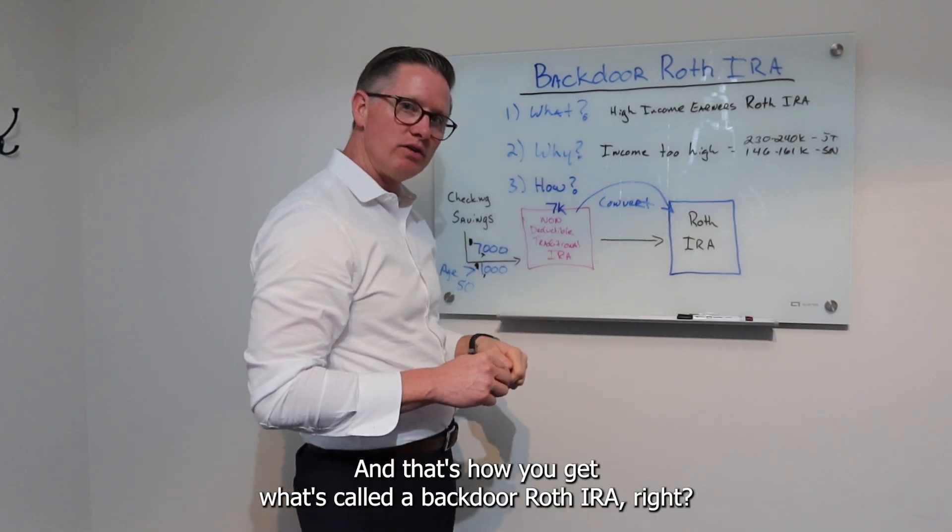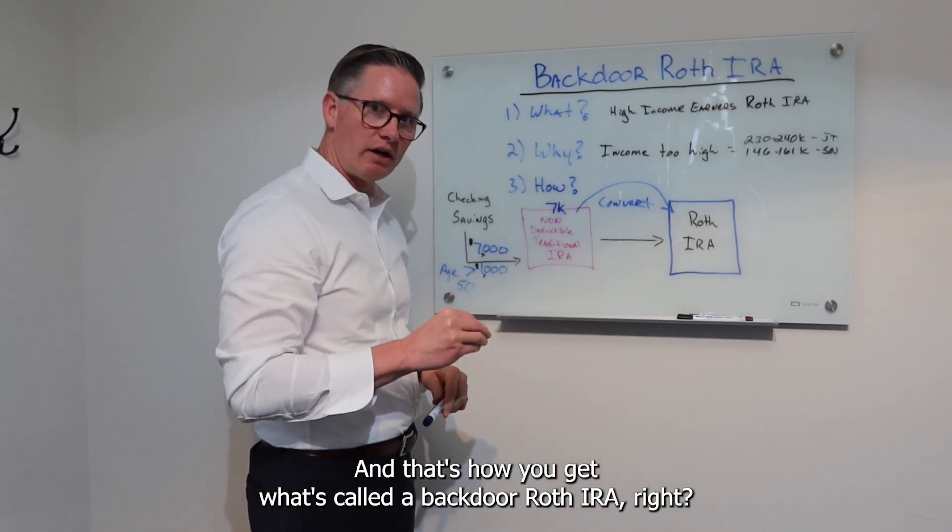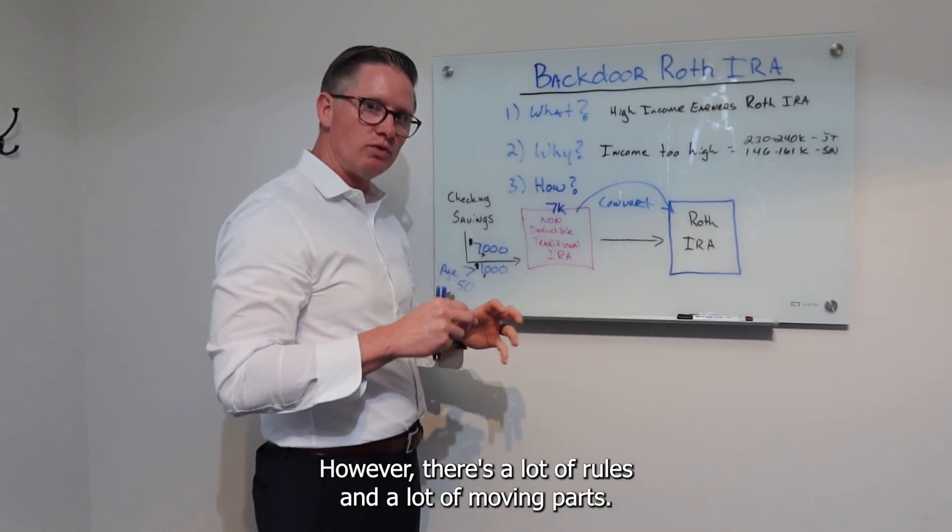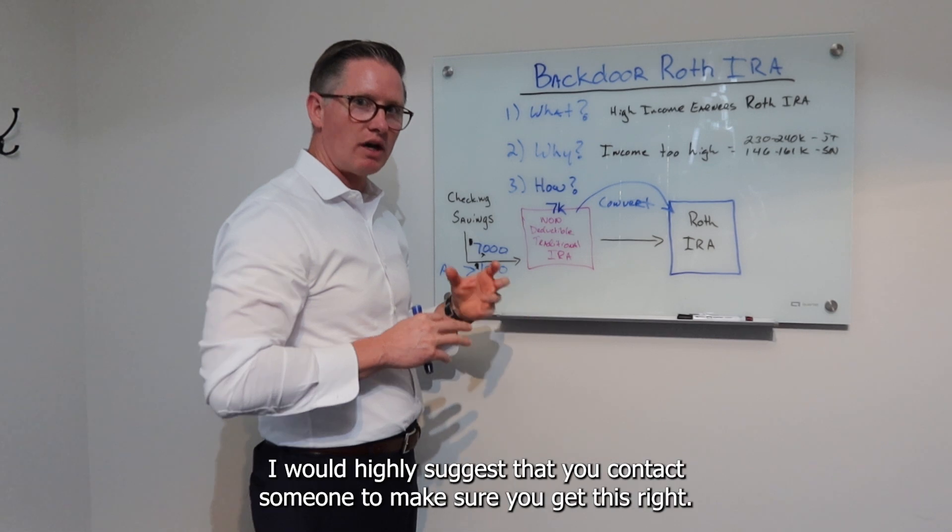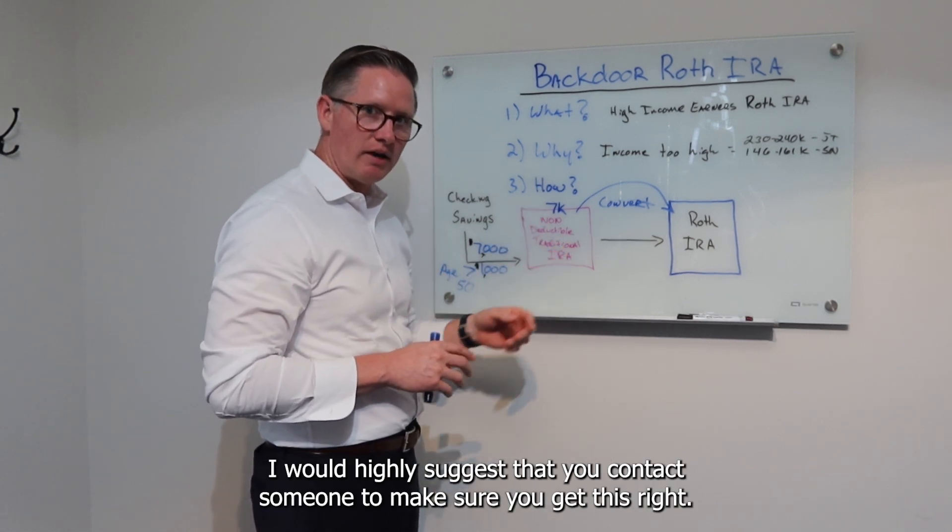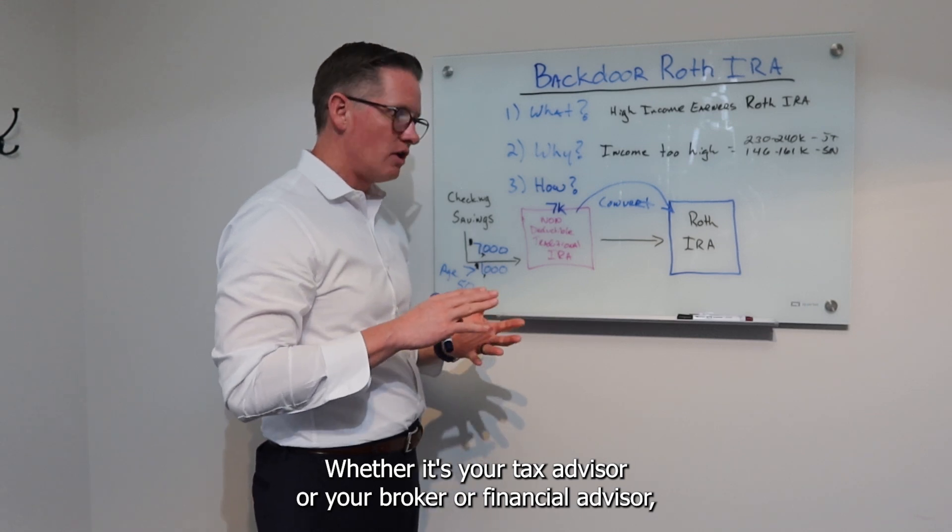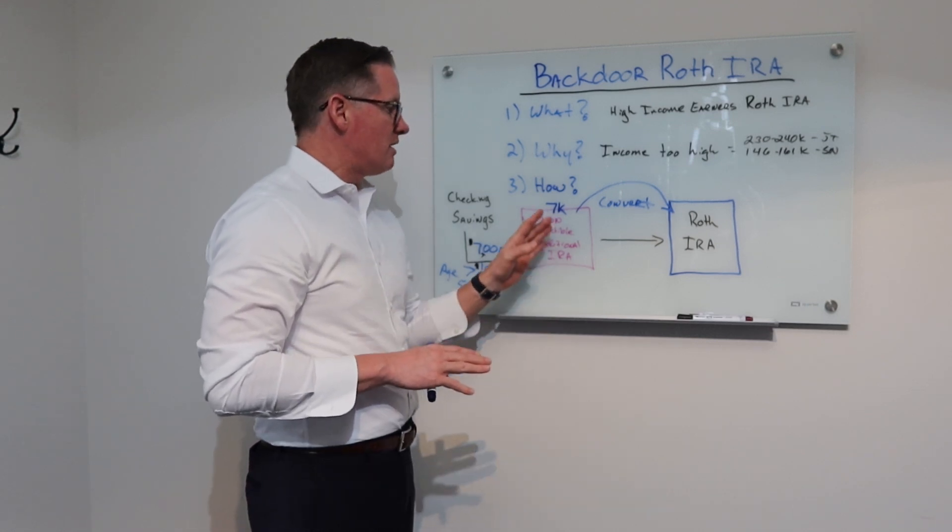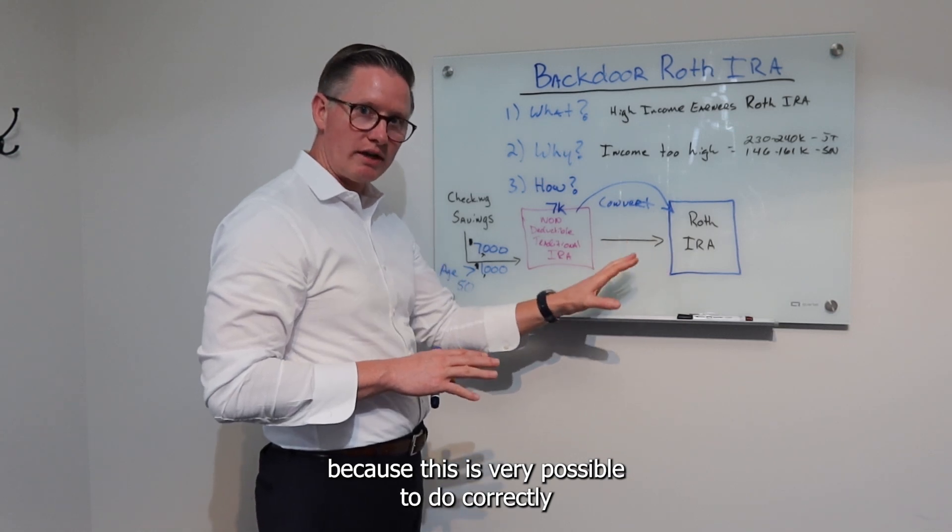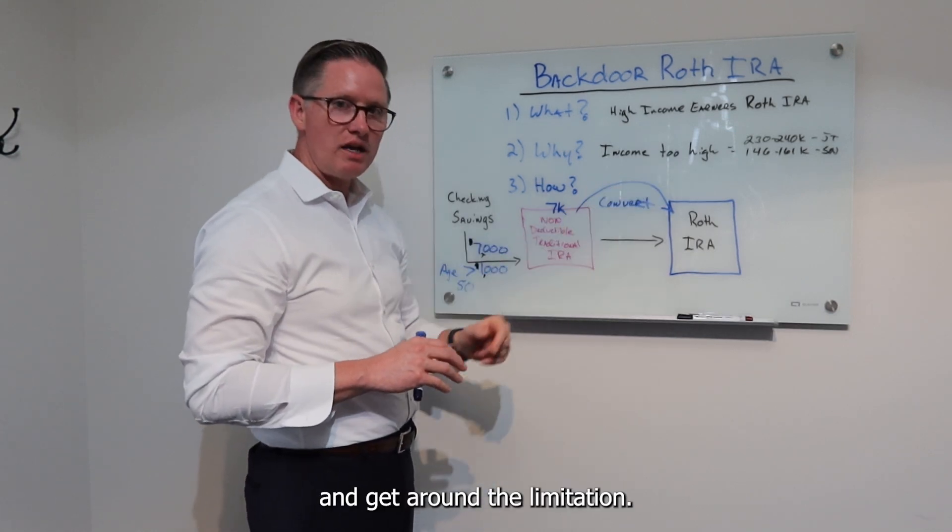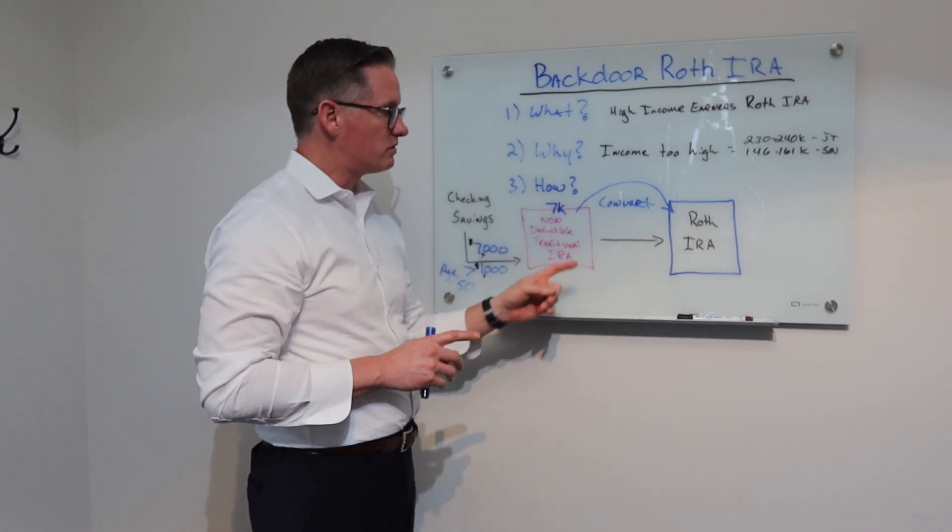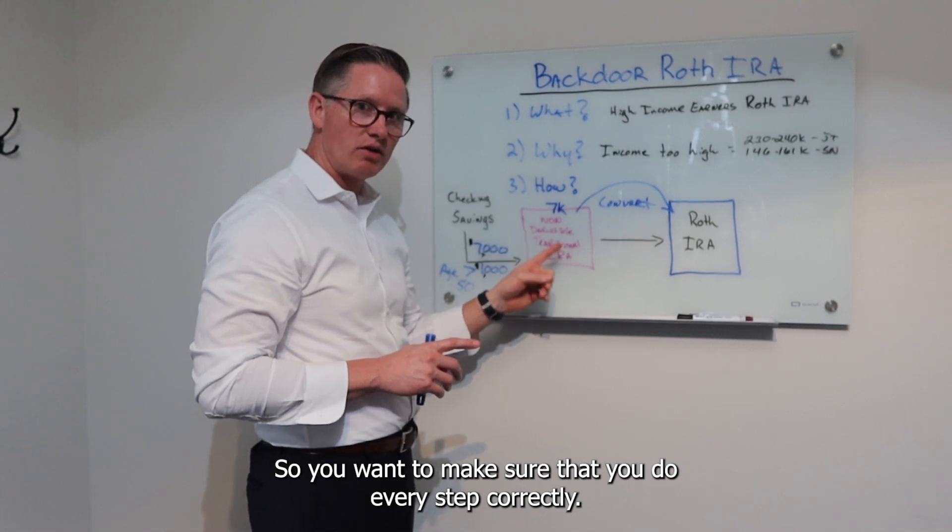And that's how you get what's called a backdoor Roth IRA. It's simple here, however there's a lot of rules and a lot of moving parts. I would highly suggest that you contact someone to make sure you get this right, whether it's your tax advisor or your broker or financial advisor, because this is very possible to do correctly and get around the limitation. However, if you do it wrong it could spell a little trouble for you. So you want to make sure that you do every step correctly.